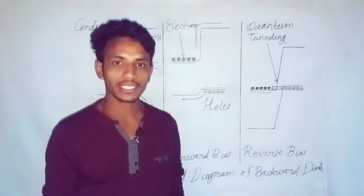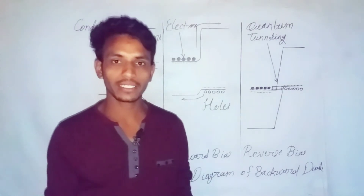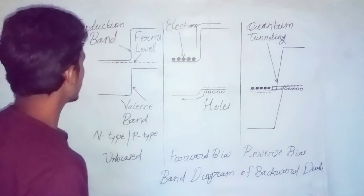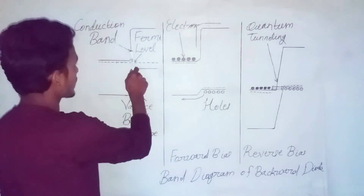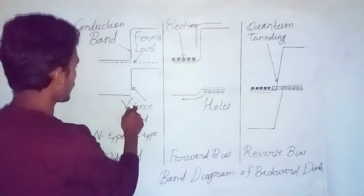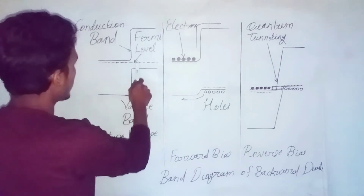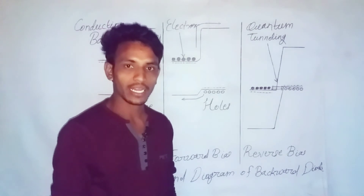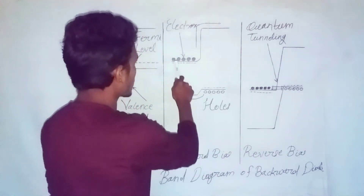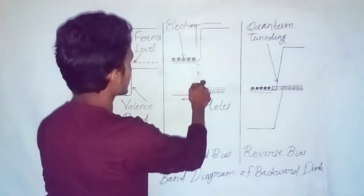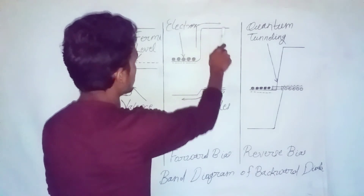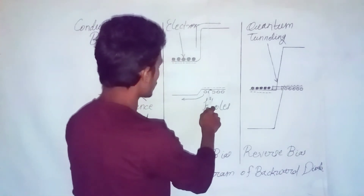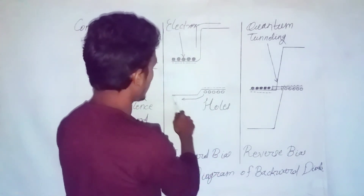The energy band of the semiconductor under no biased condition can be seen in the diagram. The band which is at higher energy level is called the conduction band, and the band which is at lower energy level is called the valence band, along with the Fermi level. When external energy is supplied to electrons, they attain the excited state energy and enter the conduction band. When electrons move from the valence band to the conduction band, they leave holes behind in the valence band.